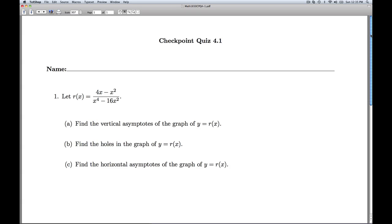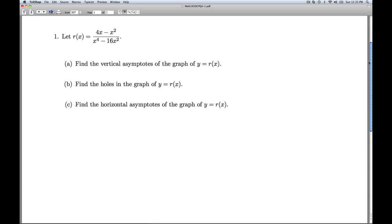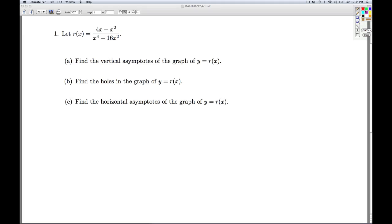Hi, folks. This is College Algebra Checkpoint Quiz 4.1. We're given a rational function, r of x. In part A, we're asked to find the vertical asymptotes of the graph y equals r of x. In part B, we're asked to find the holes in the graph of y equals r of x. And in part C, we're asked to find the horizontal asymptotes of the graph y equals r of x.